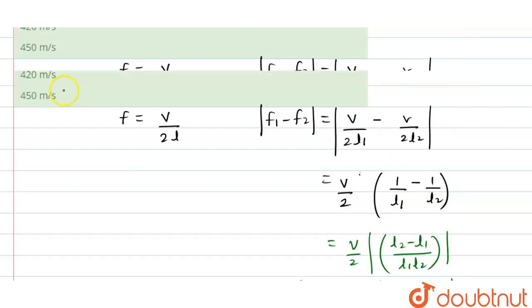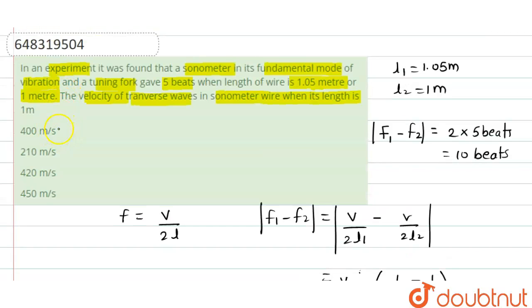So the speed of the transverse wave for that sonometer wire will be equal to 420 meter per second, that is option C.